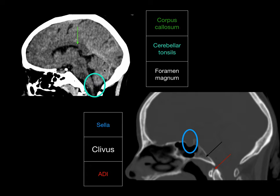Look at the foramen magnum, cerebellar tonsils, cervicomedullary junction, and whether there is any crowding. In the bone window mid-sagittal view, look at the sella and the clivus for lytic lesions, metastasis, chondrosarcoma, or chordomas, and the atlanto-axial or atlanto-dental interval.